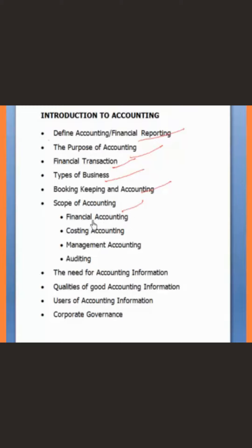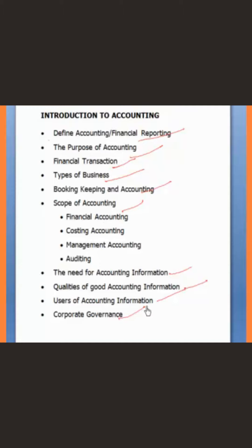We also look at the scope of accounting, which includes financial accounting, cost accounting, management accounting, and auditing. Then we look at the need for accounting information, the qualities of good accounting information, the users of accounting information, and finally corporate governance.